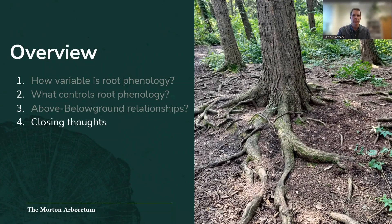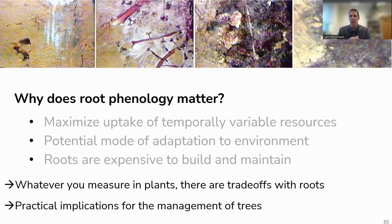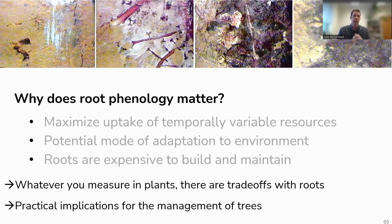To close with a few thoughts and hopes for the future: if we want to understand how forest species can maximize the uptake of temporally variable resources — nitrogen, phosphorus, and water — we have to understand the timing of root production. That can help us understand how species will adapt or respond or potentially shift their distributions as we see changes in precipitation in our different forests. It also gives us a much better understanding of the whole carbon budget and carbon balance of a forest ecosystem — whether it's a carbon-limited tree species or one basically trying to dispense with excess carbon. This definitely has important trade-offs for how we understand photosynthesis, phenology of other tissues, and practical implications for tree management.